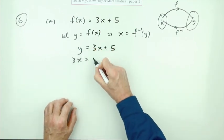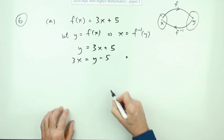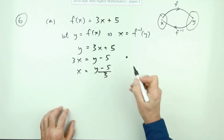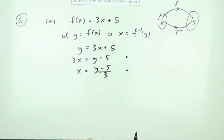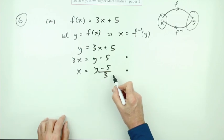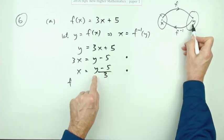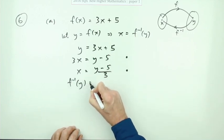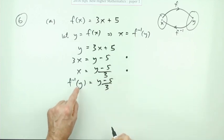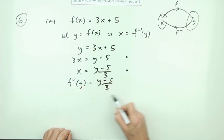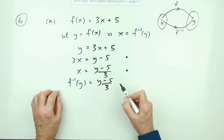Rearranging: 3x equals y minus 5 — that gets you the first mark. So x equals (y minus 5) over 3 — that gets you another mark. What this says is: the inverse function acting on y produces (y minus 5) over 3. If you put your answer into the inverse function, take away 5 and divide by 3, you get the number you started with.